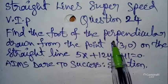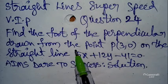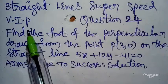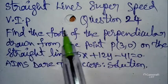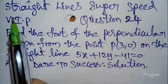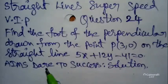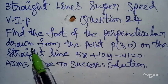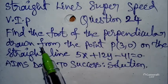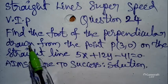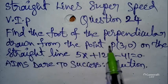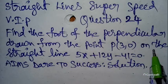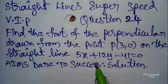Super speed VIP question, 24th part. I am very happy to say I have already uploaded VIP questions for 23 parts from the straight lines chapter. VIP is a very important previous question — VIP is always VIP. Today our question is: find the foot of the perpendicular drawn from the point P(3, 0) on the straight line 5x + 12y − 41 = 0.